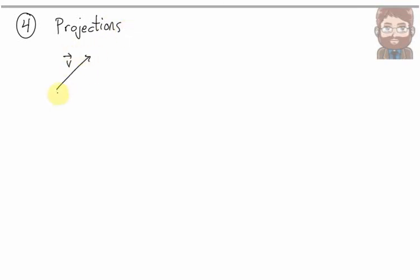Now sometimes you want to break a vector into two parts. You want to write a vector V as the sum of two vectors, one going in the direction of W, and one going in the direction perpendicular to W.